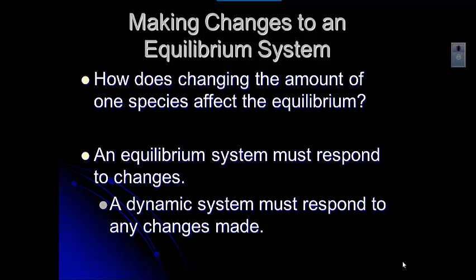So if we add a reactant, if we add a product, if we remove a reactant or remove a product, or if we add heat or cool a system, we need to look at what happens. When we make a change to an equilibrium system, that system responds to the changes. Remember that it's dynamic — the reactions are happening in the forward and reverse direction. Because those reactions are occurring, if you change something, it affects the whole system.